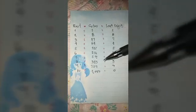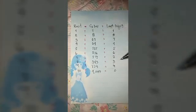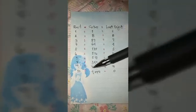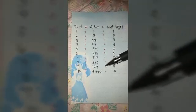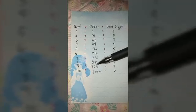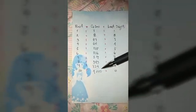8 is 343, last digit is 3. 9 is 729, last digit is 9. 10 times 10 times 10 is 1000.